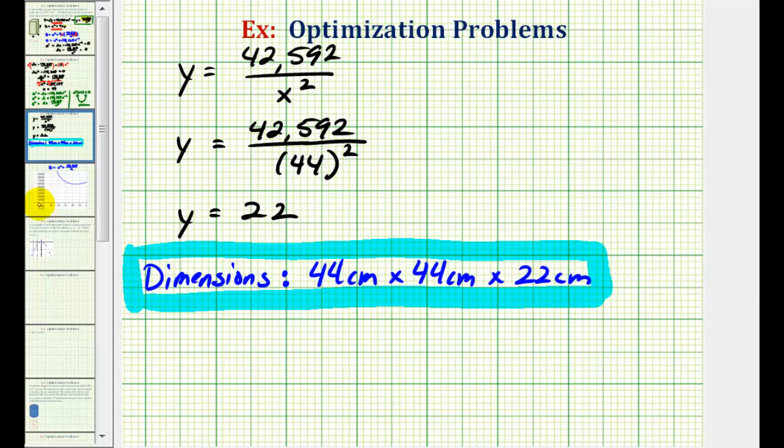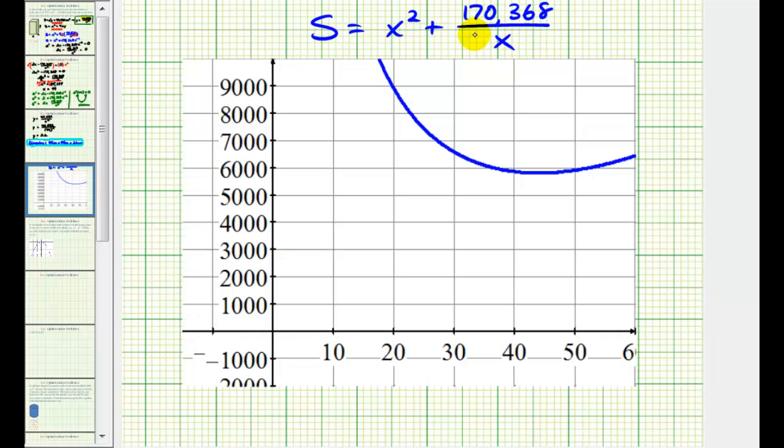To verify this, let's take a look at the graph of the surface area formula once we had it in terms of x. Here's the surface area formula that we used. Notice if we graph this, here's the location of a minimum value for the surface area. Notice the x value does appear to be 44. Notice the y value would actually be what that minimum surface area would be. So let's go ahead and substitute 44 for x to verify that this surface area is less than 6,000 cubic centimeters.